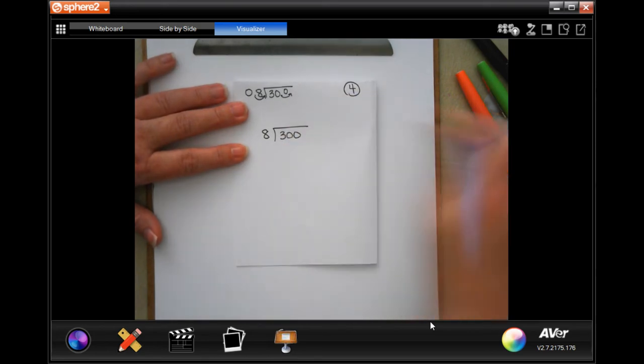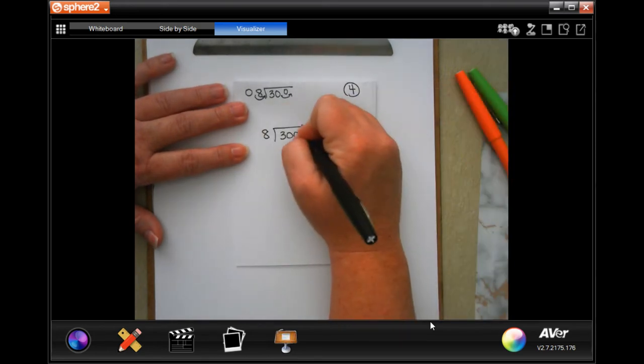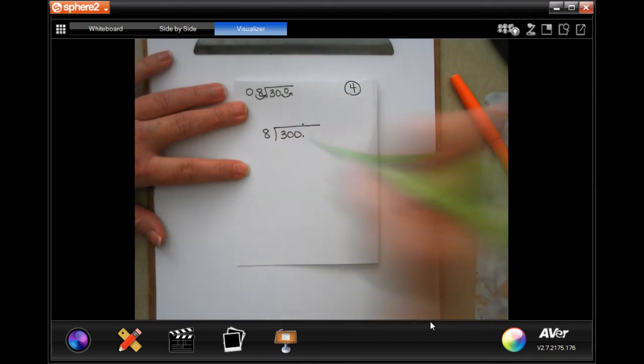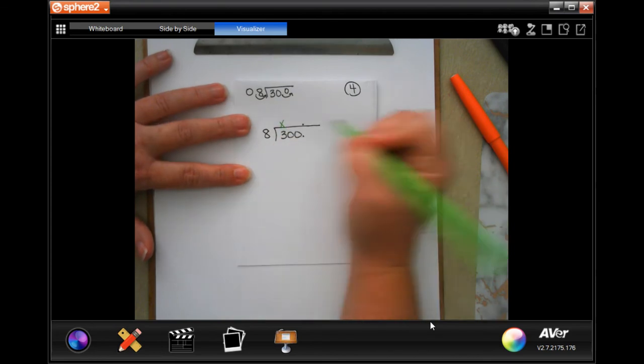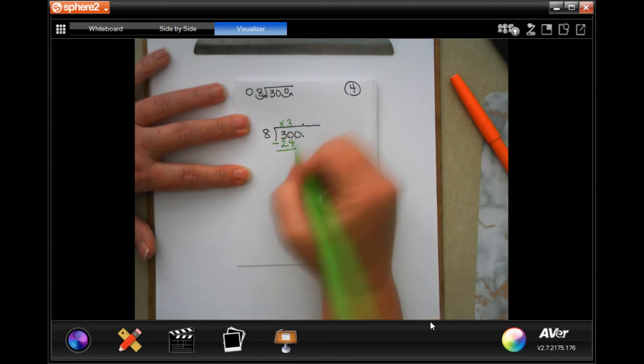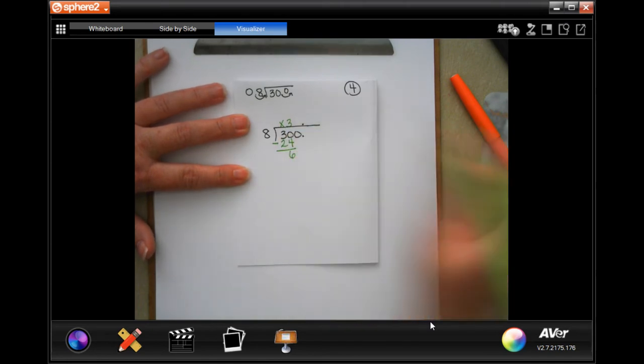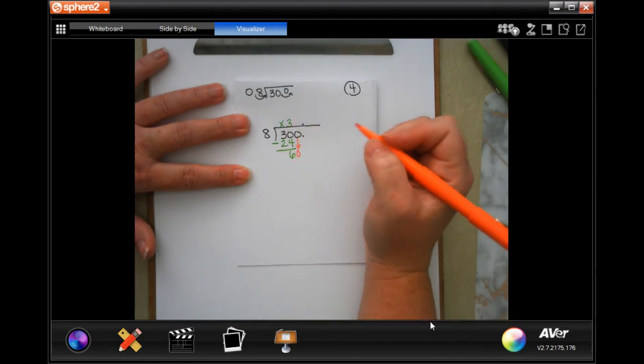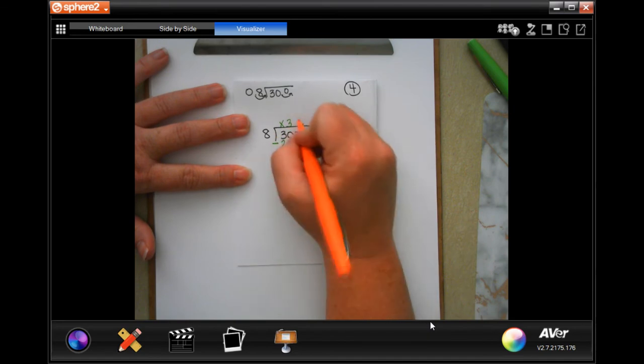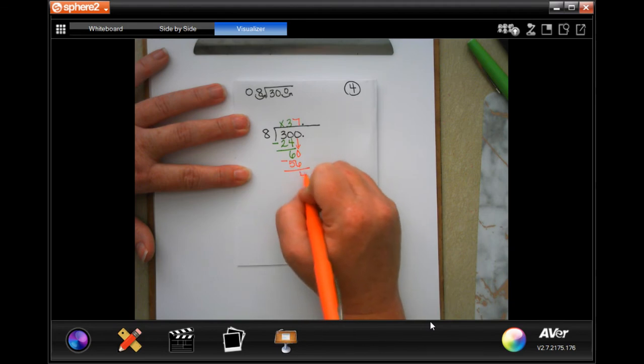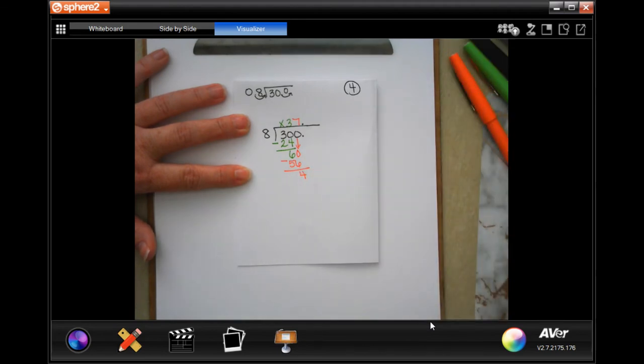So now my new problem is eight into 300. I'm going to actually, just in case I wind up having to add a zero, I don't know that I will, but just in case. Now, eight is not going to go into three. I'm going to put a placeholder. Eight will go into 30 three times, which is 24. Subtract. 30 minus 24 is going to be six. Six is smaller than eight, so I'm going to bring down my zero.